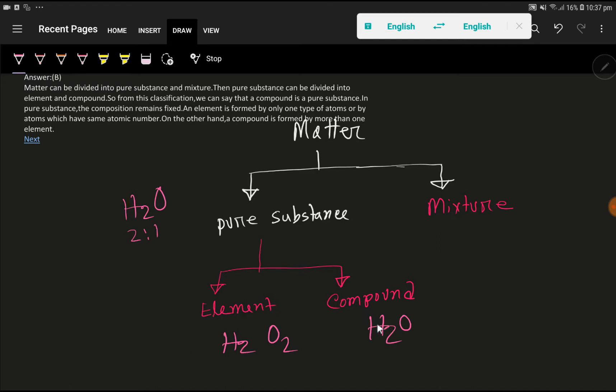Look, the atomic number of hydrogen is different from oxygen. But the atomic number of two hydrogen atoms is similar, the atomic number of two oxygen atoms is similar.